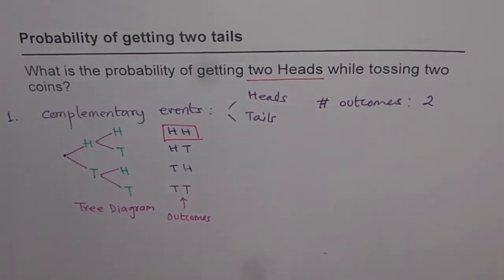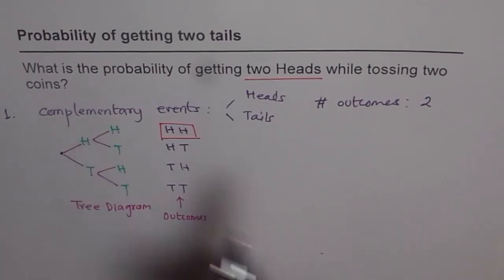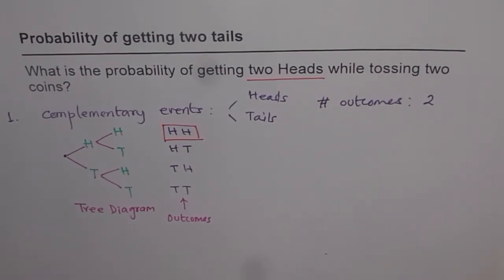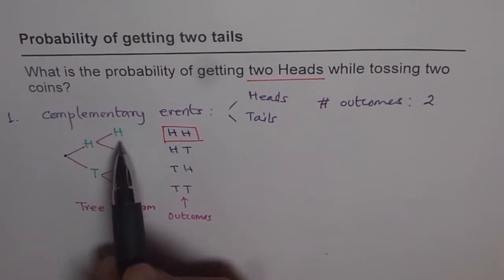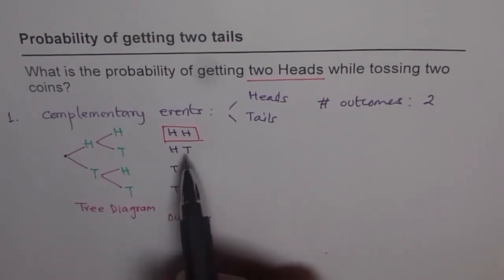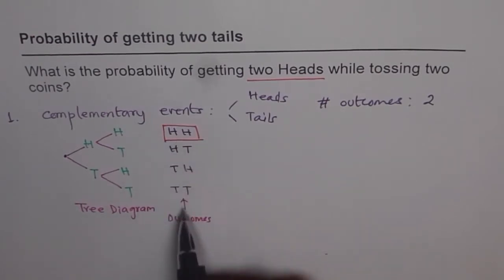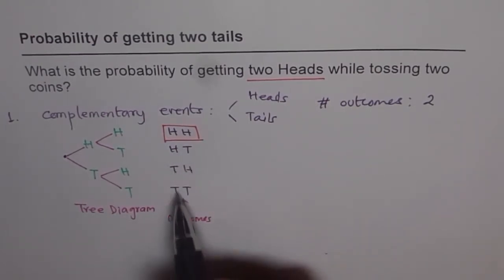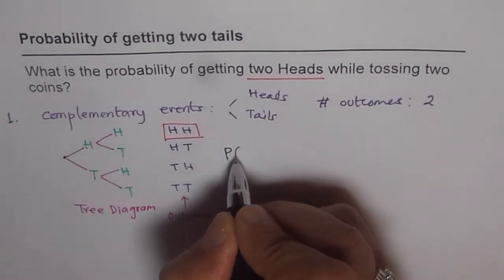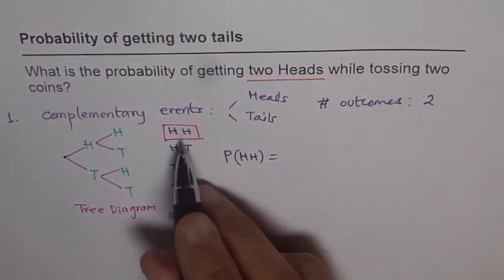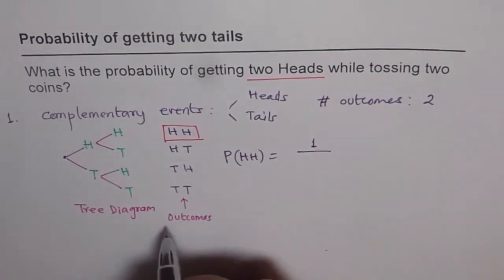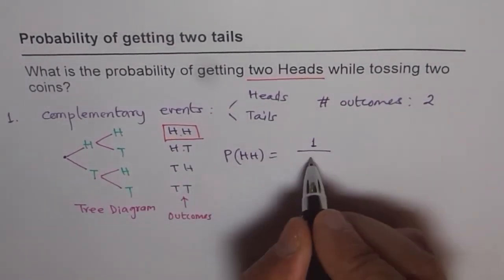So that is how we solve this problem. Complementary events tell us that if you get head, you cannot get tail — there are two options, head or tail, for one coin. For the second coin also, there are two options. When you toss two coins, there are four total outcomes. So the probability of getting two heads is: favorable outcomes — just one — over total number of outcomes — one, two, three, four. That gives us one over four.